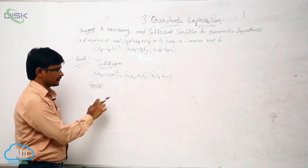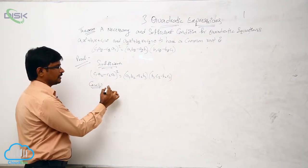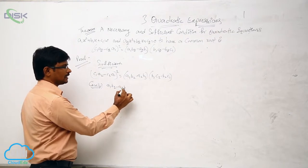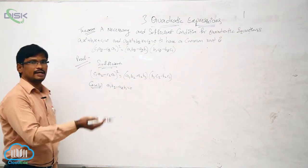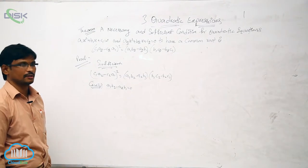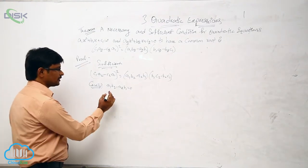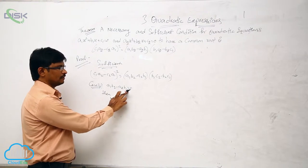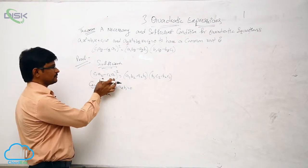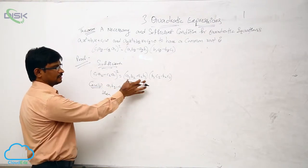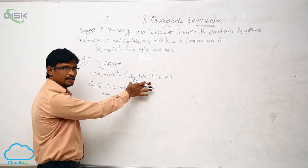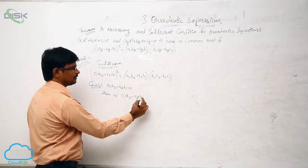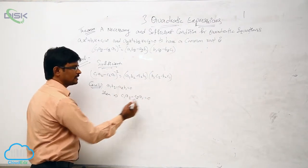Case 1: a1·b2 - a2·b1 = 0. In Case 2, we will take it not equal to 0. Suppose if you take a1·b2 - a2·b1 = 0 and substitute in this condition, the total value becomes 0. We get c1·a2 - c2·a1 = 0.